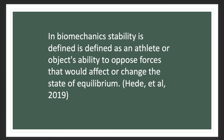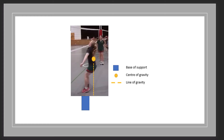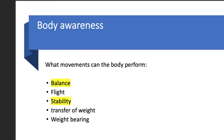During the take-off phase of my hit, I am working the sagittal plane. Through analysis of primary visual data, I can identify that one of my biomechanical weaknesses is stability. In biomechanics, stability is defined as an athlete or object's ability to oppose force that would affect or change the state of equilibrium. It is evident that my line of gravity isn't within my base of support. This makes me unstable, as the further the line of gravity is away from the centre of my base of support, the more stability is reduced. This ties into the body and movement concept of body awareness, and particularly the components of balance and stability.